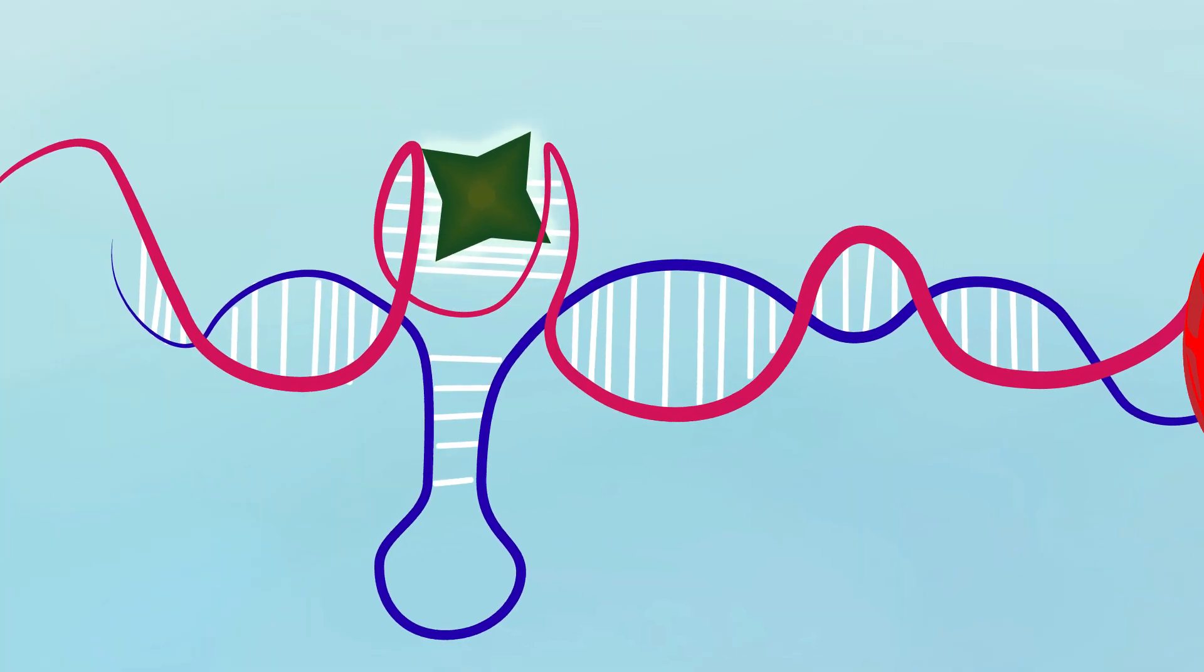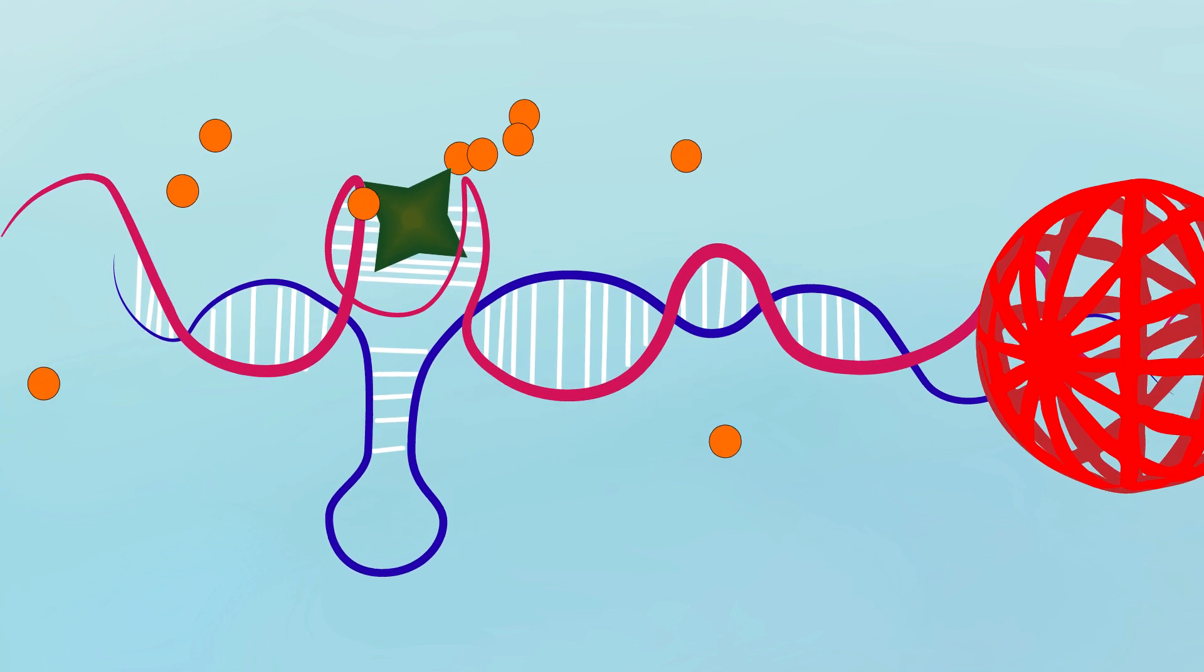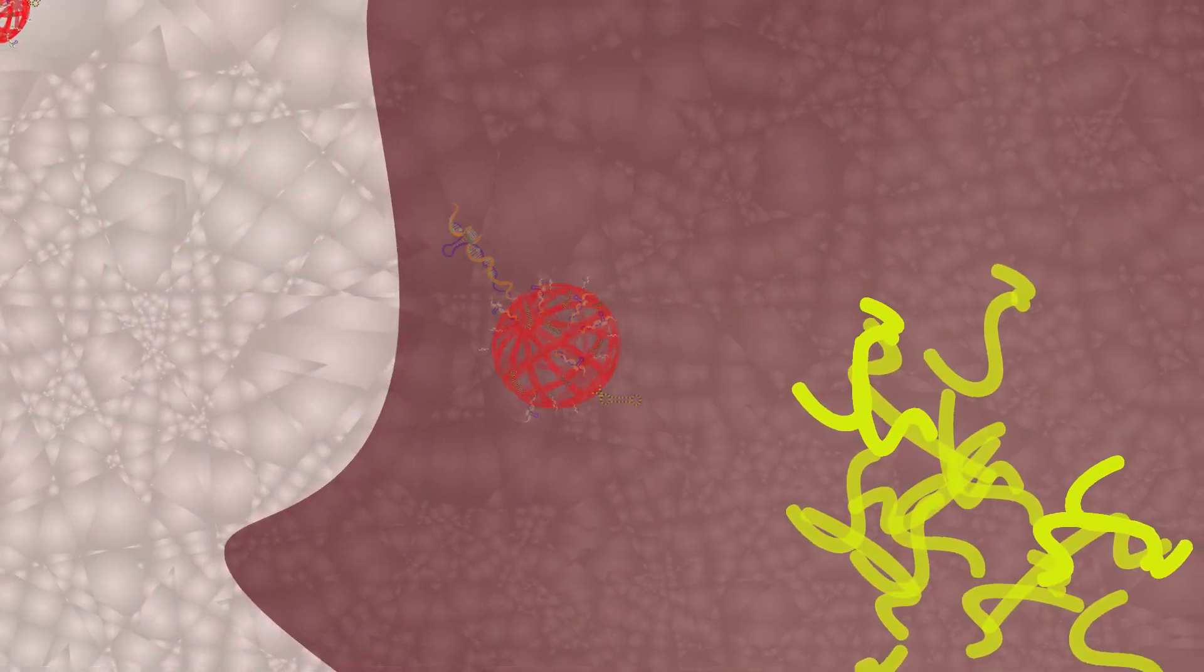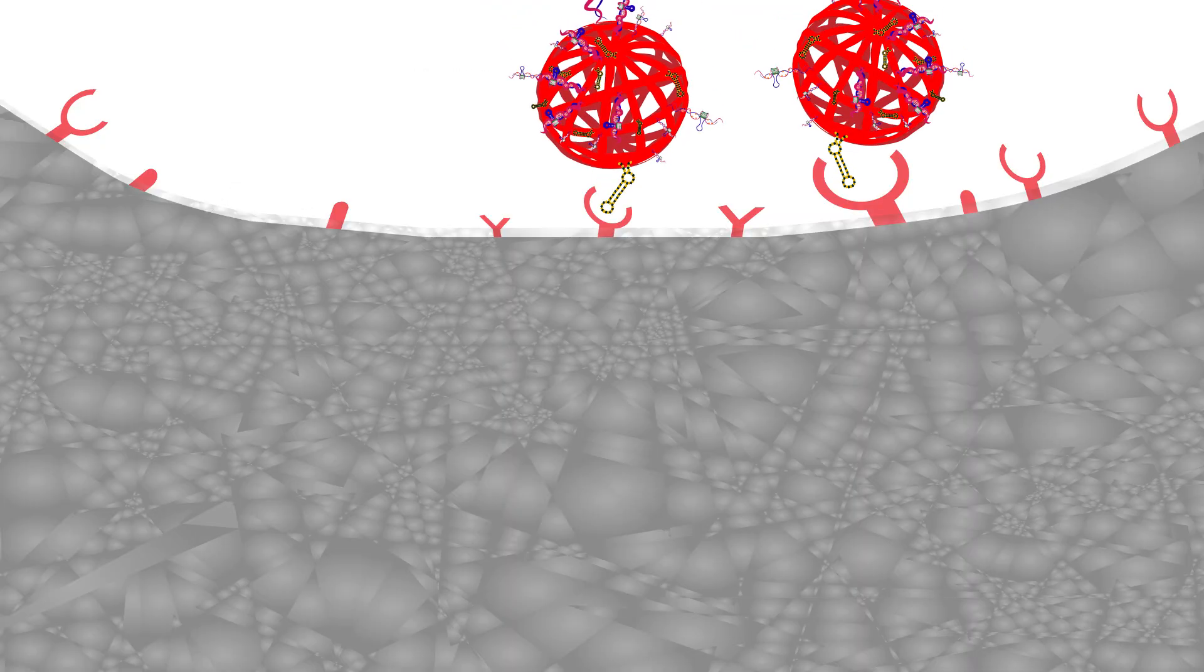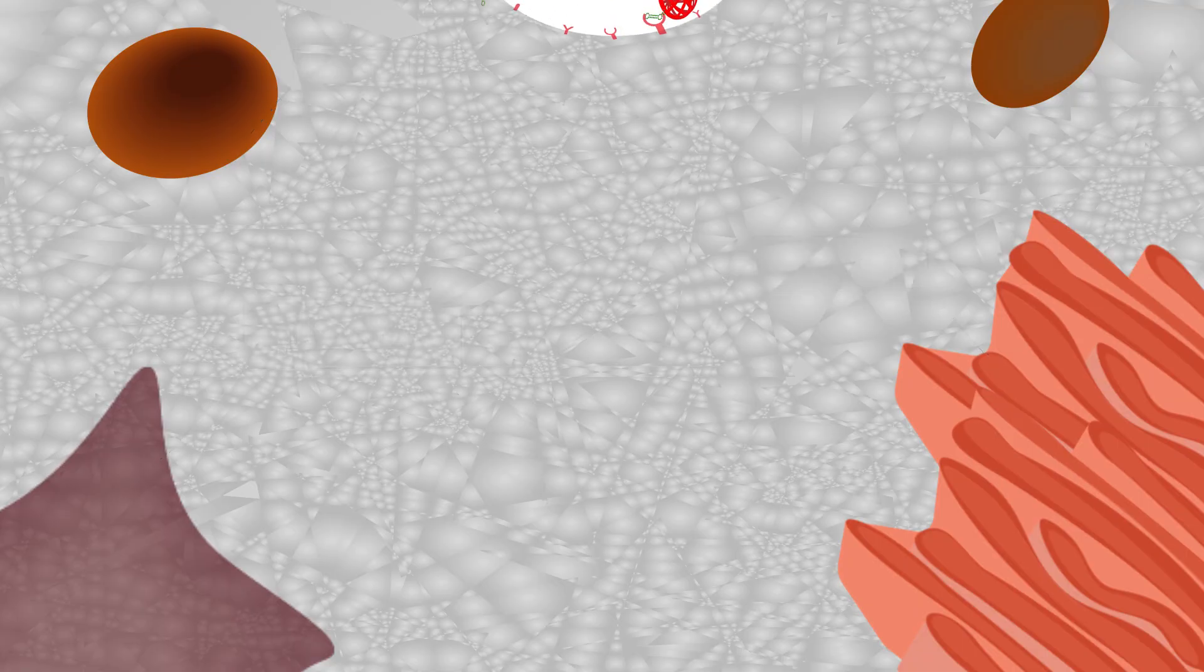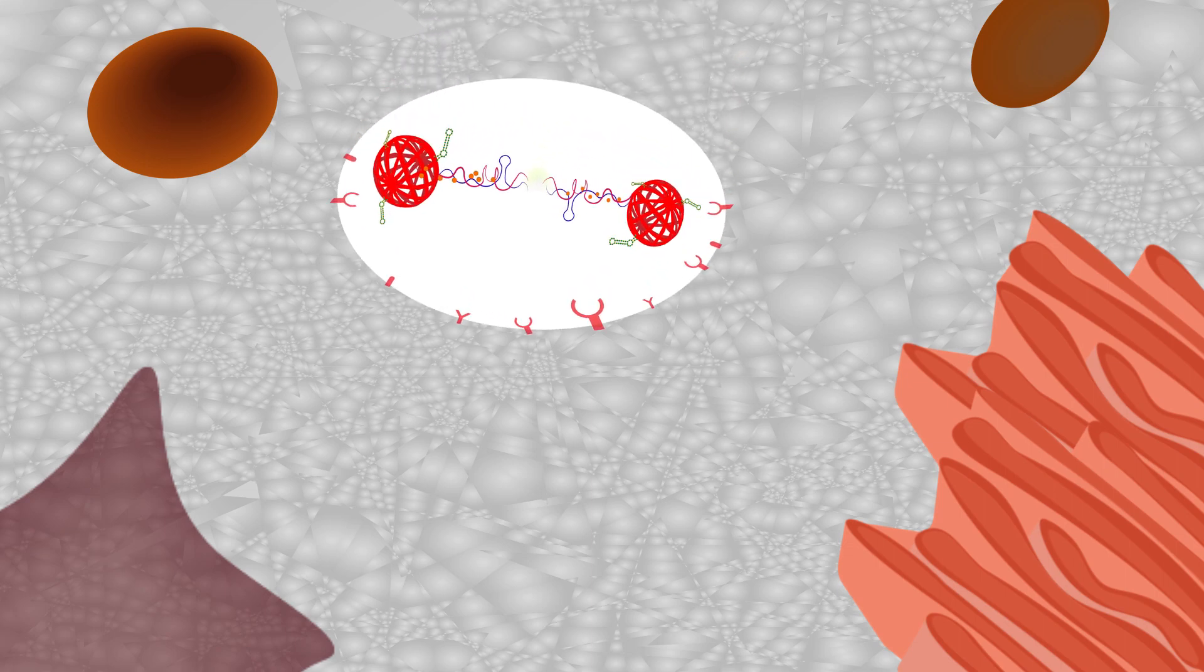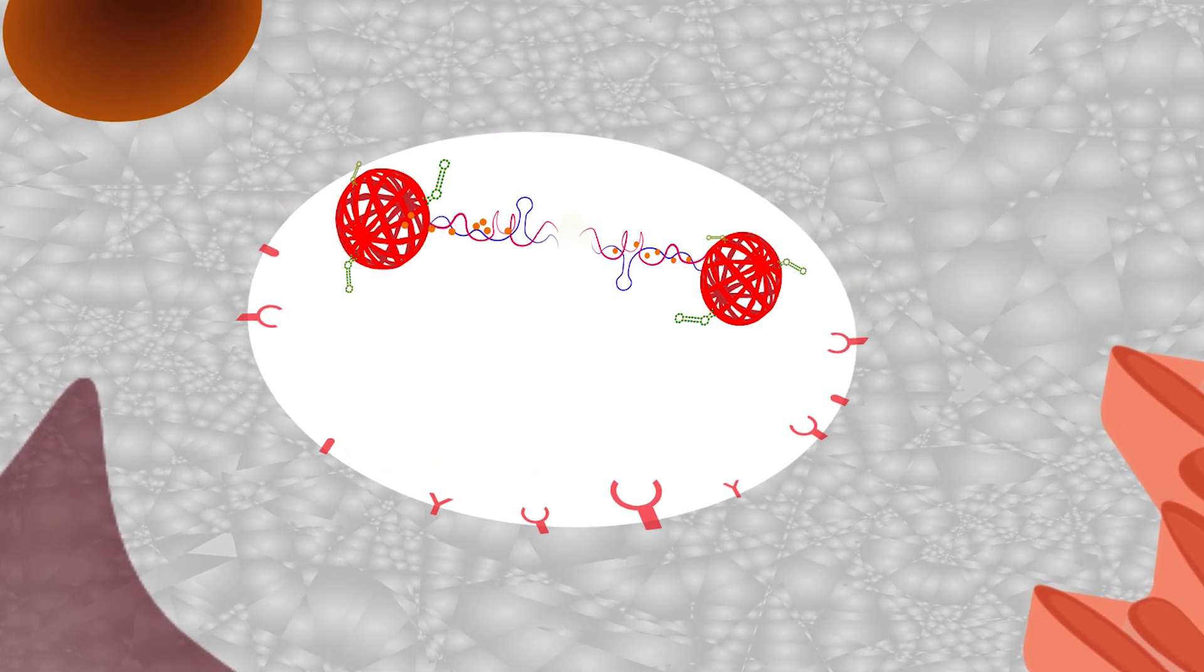The i-motif with the complementary sequence carries doxorubicin. The i-motif in the duplex changes conformation in the acidic endosomal interior of cancer cells and binds the other neighboring i-motifs, displacing the complementary strand. Doxorubicin is consequently released.